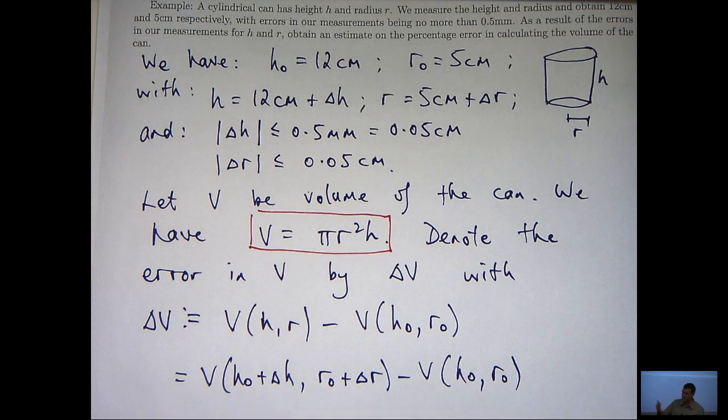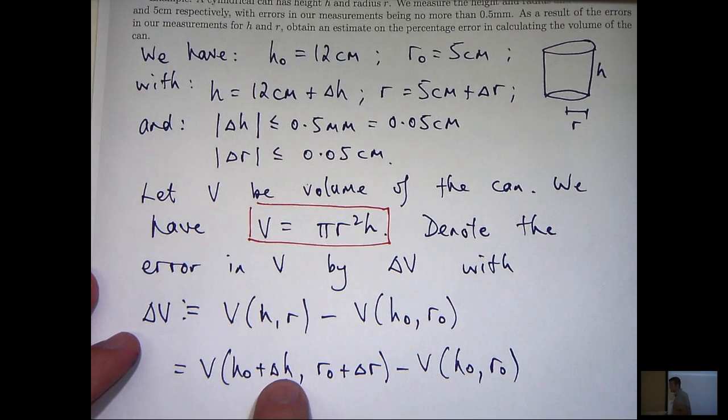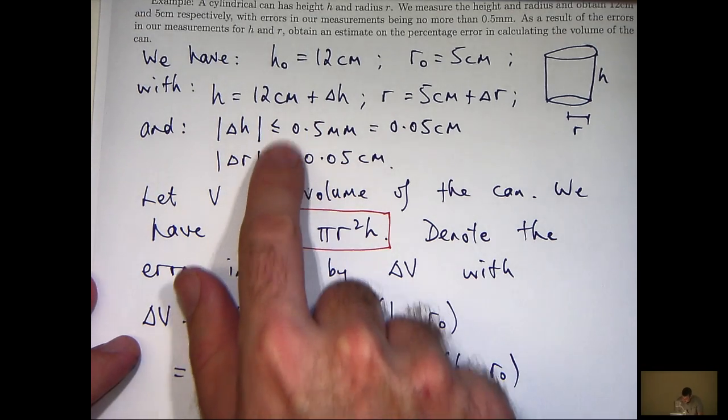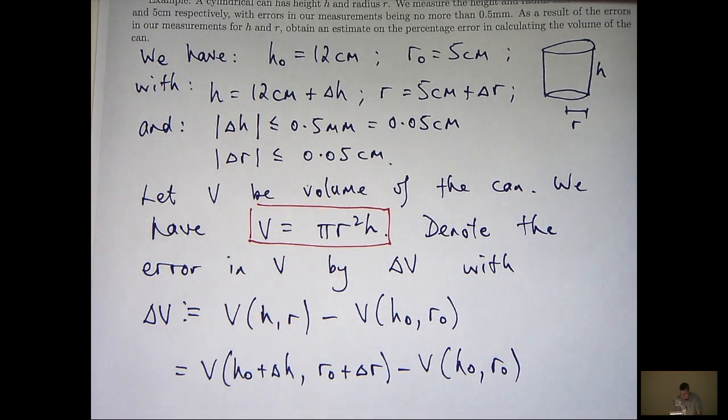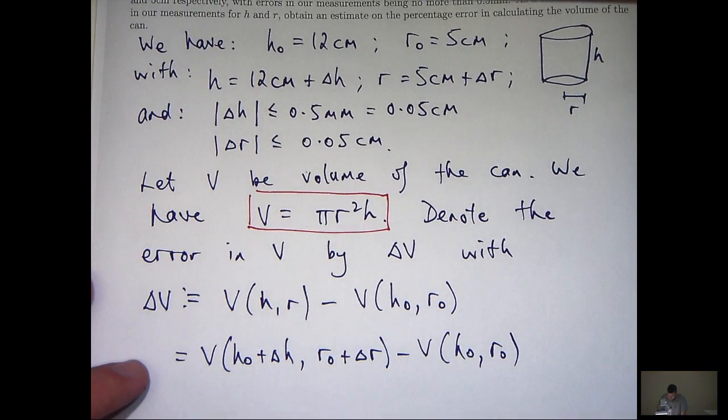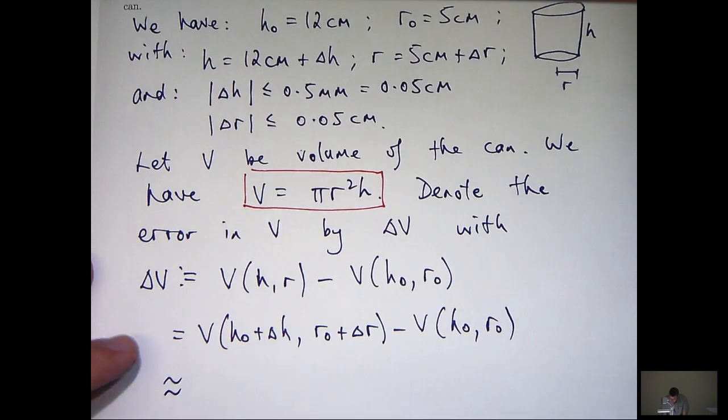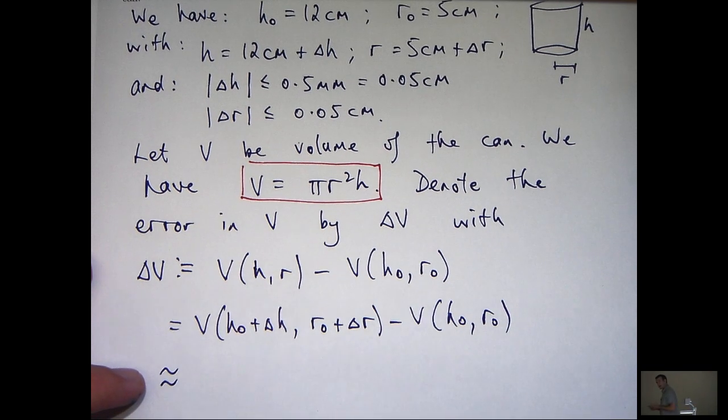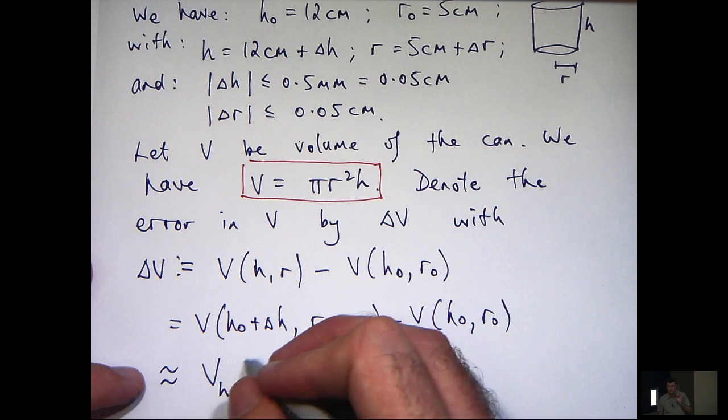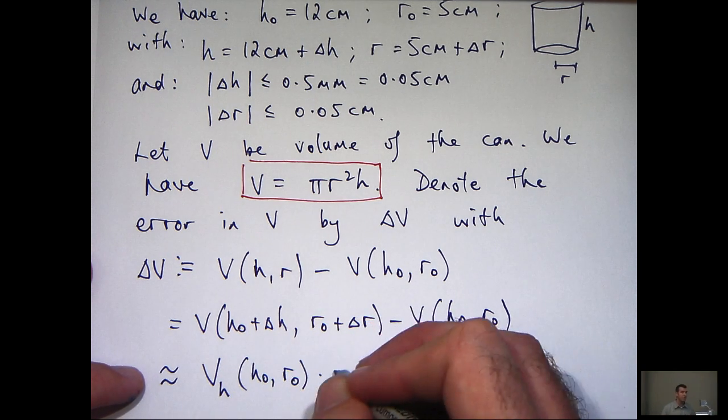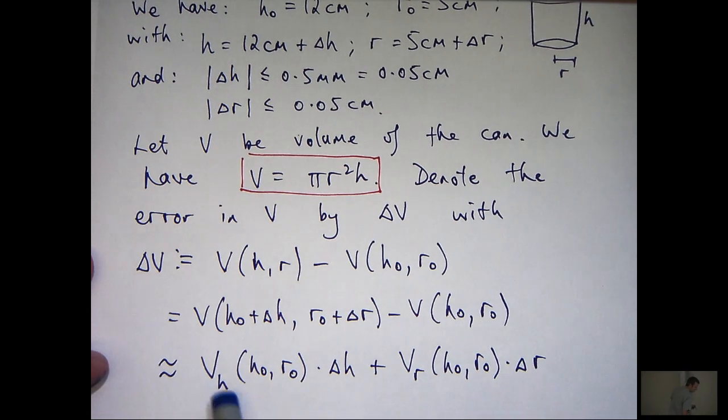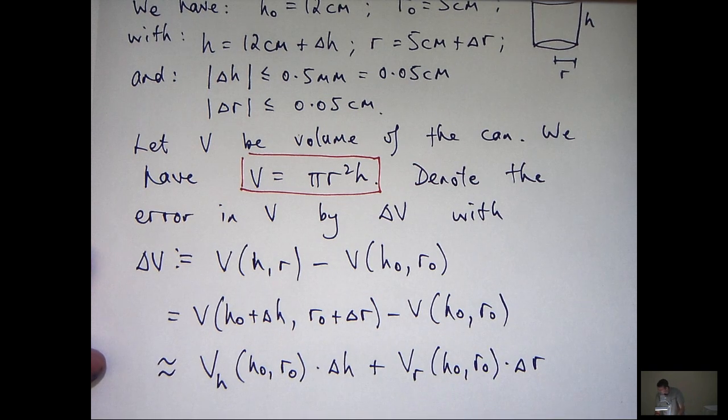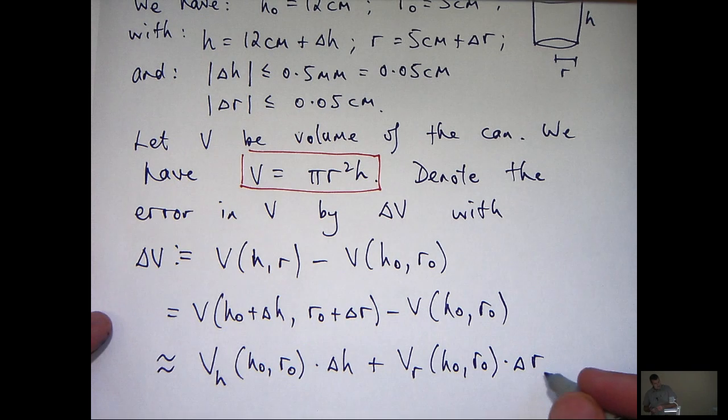So what we'd like to do is try to calculate this. But the point is we can't because Δh and Δr are unknown. All we do is have two estimates on them. Well, what we can actually do here is use a Taylor polynomial approximation. It's a linear approximation. So essentially we can form approximately equal to and introduce partial derivatives here. So the subscripts mean Vₕ means dV/dh evaluated at this point, dV/dr evaluated at this point.